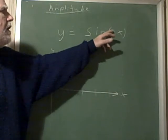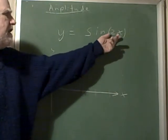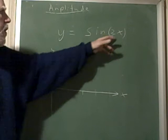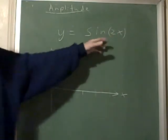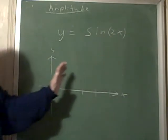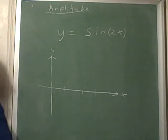For instance, when it hits pi over 2, 2 times pi over 2 is actually pi. So when x is pi over 2, it's actually the sine of pi, so it's moving much faster.